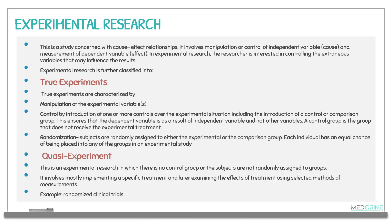Manipulation involves the experimental variables of the research. Control is achieved by introducing one or more controls over the experimental variables, ensuring that the dependent variable results from independent variables and not other variables. A control group is the group that does not receive an experimental treatment.